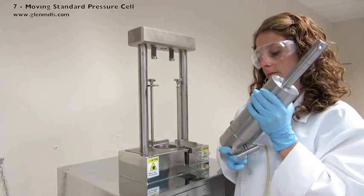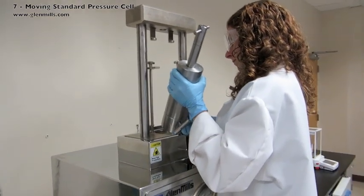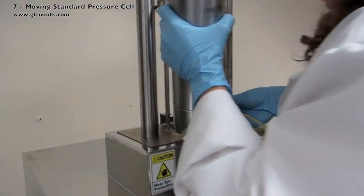Support the bottom closure plug to prevent it from dropping out of the cell body. Lift and insert onto the ring on the bottom platen.